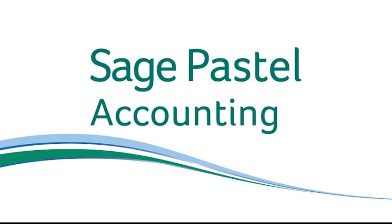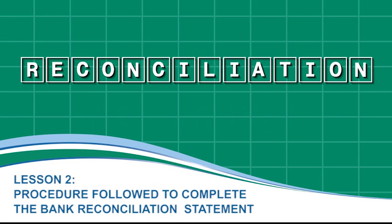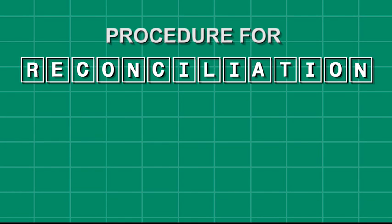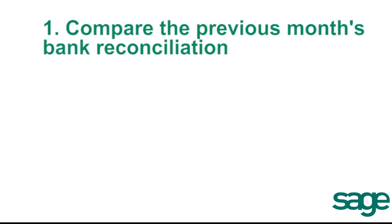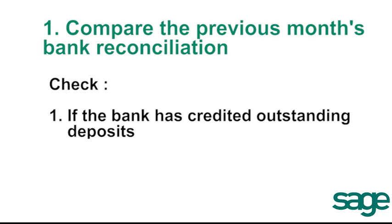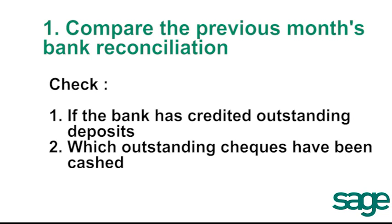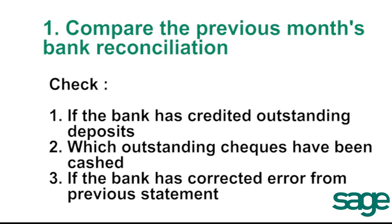Our topic in this Sage Pastel accounting lesson is the procedure followed to complete the bank reconciliation statement. The first step in our procedure is to compare the current bank statement with the previous month's bank reconciliation. You need to check if the bank has credited outstanding deposits, check which outstanding checks have been cashed, and if the bank has corrected any errors that may have occurred on the previous statement.